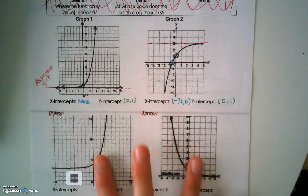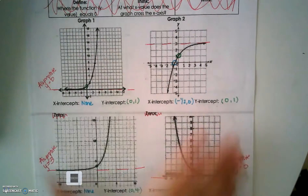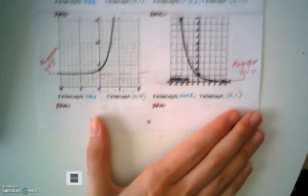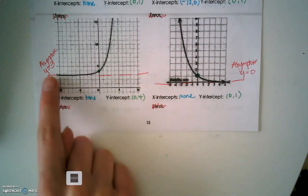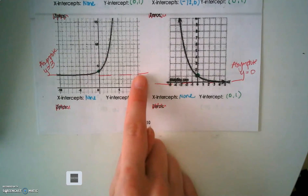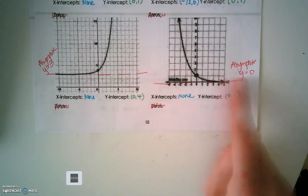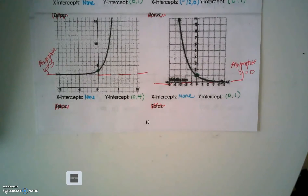Work on these other two graphs to provide the answers and come back and check. Again, notice you have an asymptote that's either above the x axis or on the x axis, so you won't have any x intercepts.